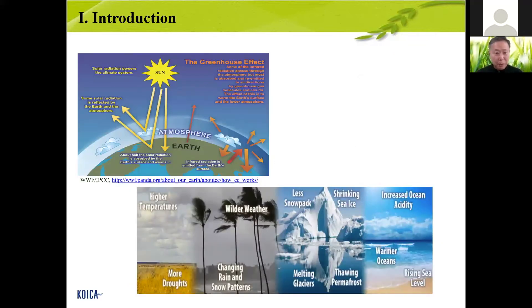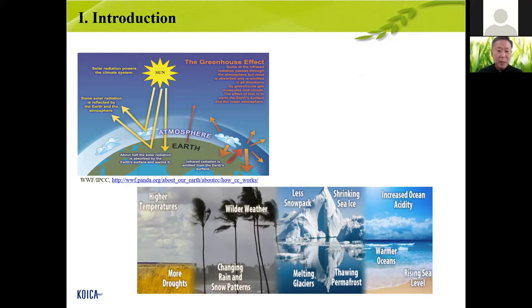I've brought some pictures from WWF and IPCC. The top left shows the greenhouse effect: solar radiation powers from the sun, most of it comes through to the Earth, and most of the solar radiation then returns back outside the Earth. But because of greenhouse gases like CO2 and methane, heat stays inside the atmosphere. This is the greenhouse effect and temperature goes up.